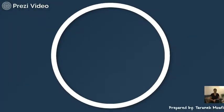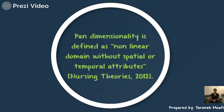Next is pandimensionality. She defined it as a non-linear domain without spatial or temporal attributes. The parameters that humans use in language to describe events are random, and the present is relative. The theory stated that there is no temporal ordering of lives.